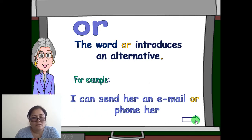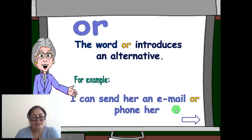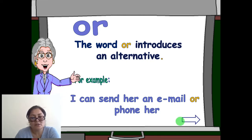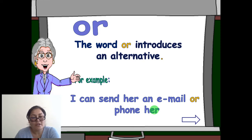For example: 'I can send her an email or phone her.' 'Or' introduces an alternative — you may send her an email or phone her.